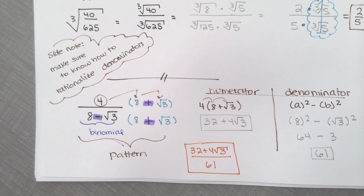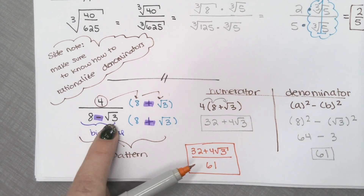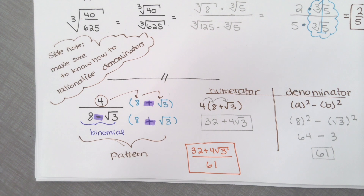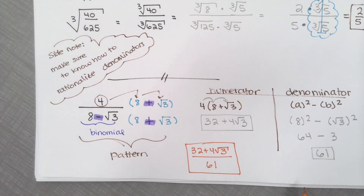So if you were to do a FOIL, it would be 8 minus cube root 3 times 8 plus cube root 3. The reason why we multiply by 8 plus root 3 is so it does not equal a square root — we want that square root to disappear. And the only way to make that happen is to use the conjugate. It's kind of like when we were doing conjugates in our previous chapter. Any other questions on that? Great questions.